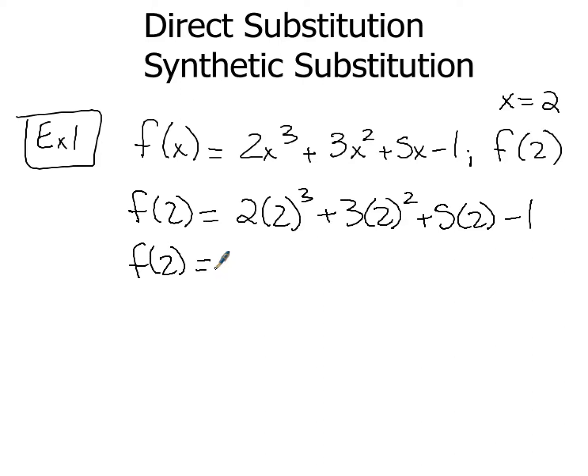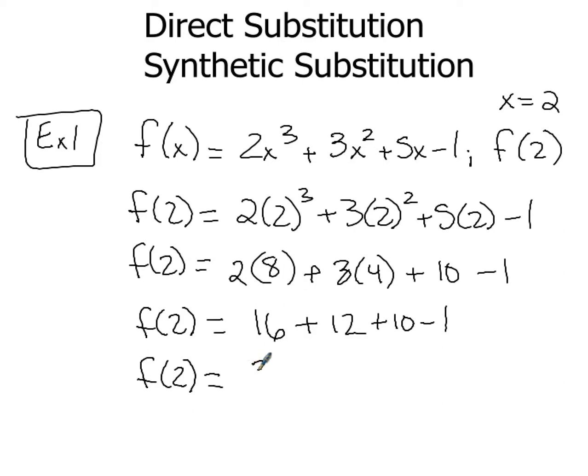So 2³ is 8. So that's that first part. Now I'm going to kind of do that together. 2 times 8, I end up with 16. Some people can go right from 2 times 2³ and come up with 16. Others might need to do it one step at a time. Now again, 2² is 4, so I'm going to have 3 times 4, which ends up giving me 12. Now this part is pretty straightforward. 5 times 2 is 10 minus 1, so I'll still have plus 10 minus 1. So when you evaluate that and you just find the sum of those numbers, 16 + 12 + 10 - 1, you end up with 37.